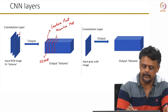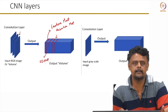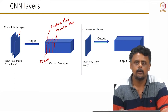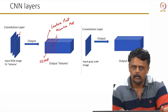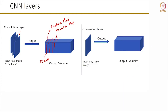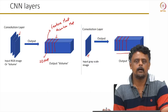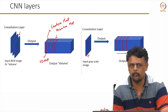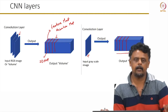Irrespective of the number of channels in your input, you can have multiple channels in your output — this is true of every layer. For instance, a layer can undergo another convolution, leading to an even higher number of activation maps being output. We will see this in some popular CNN architectures later on.